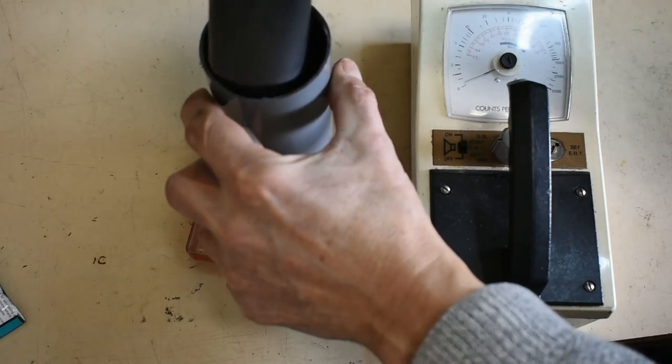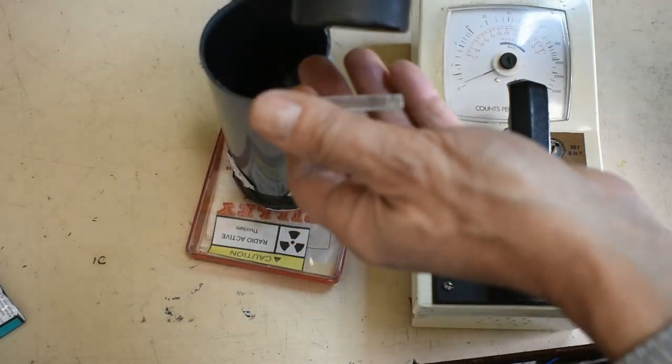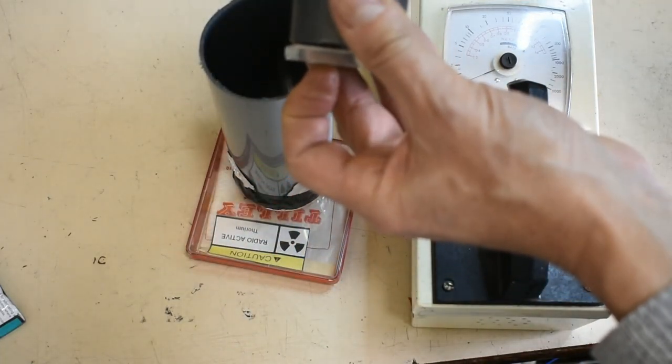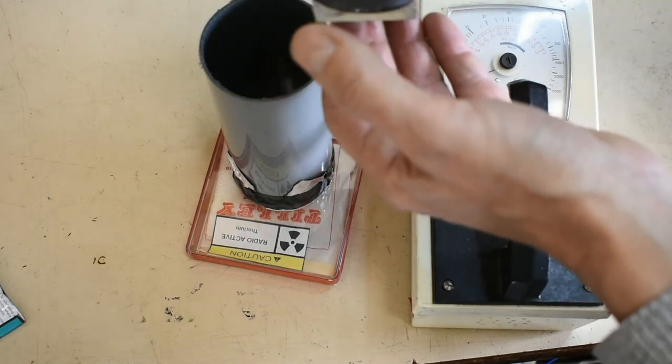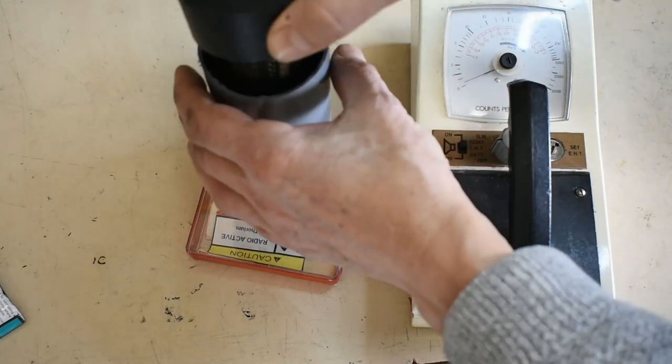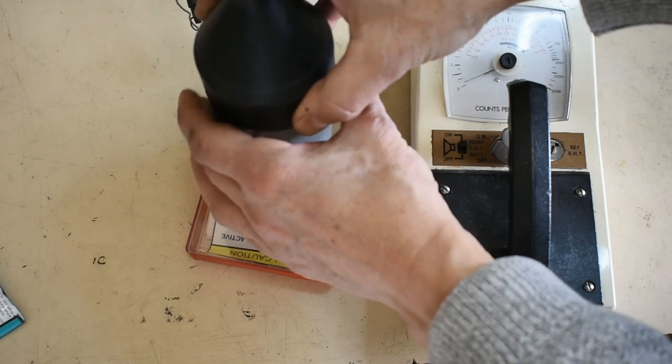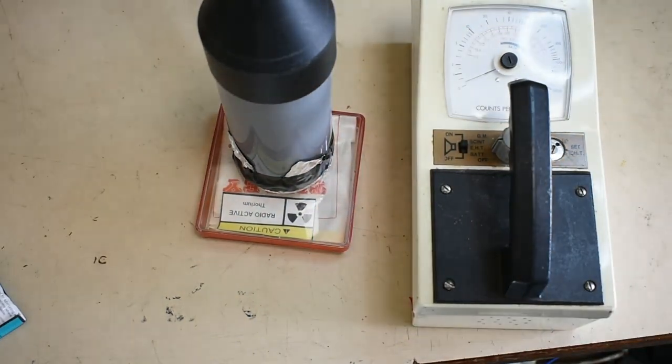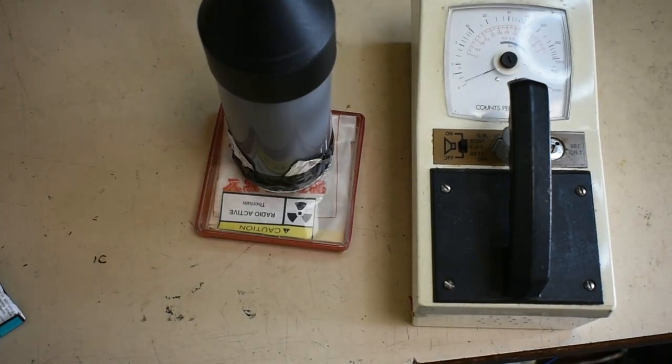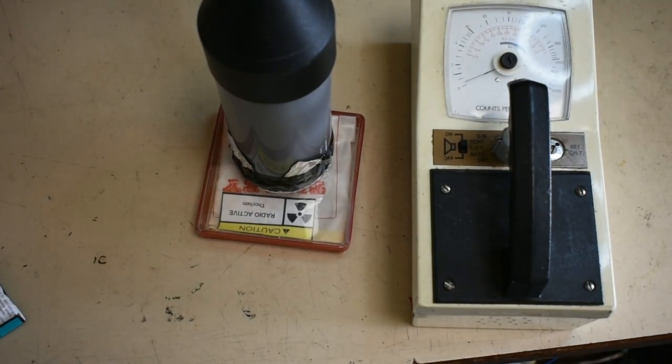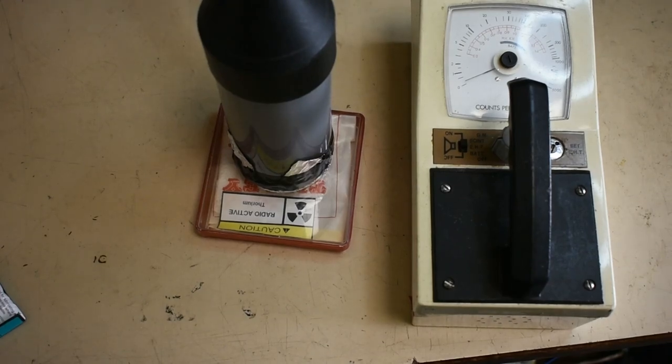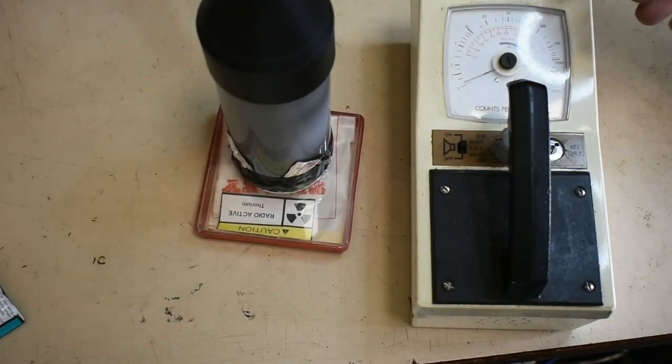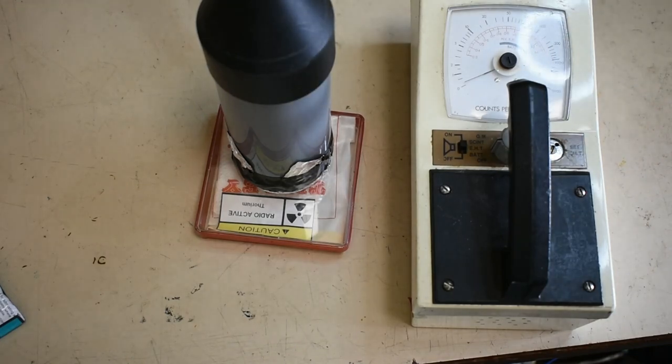I'm going to now place a piece of the plastic scintillator onto the base of this photomultiplier. Hopefully it will stay there. We'll run the same experiment again. Apply the voltage. There's an initial rush as the voltage comes up, but now we are detecting radiation from this thorium mantle.